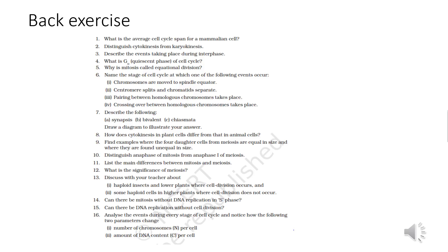Next question: describe synapsis, bivalent, and chiasmata. Synapsis is the pairing of homologous chromosomes that occurs during zygotene of prophase 1. During synapsis, the similar chromosomes come to be exactly opposite each other. A bivalent is a synapsed pair of homologous chromosomes. Chiasmata occur in the diplotene stage — these are points of attachment between homologous chromosomes during their separation from diplotene to metaphase 1. Chiasmata are initially formed in the regions of crossing over between non-sister chromatids, but later tend to shift towards the ends.